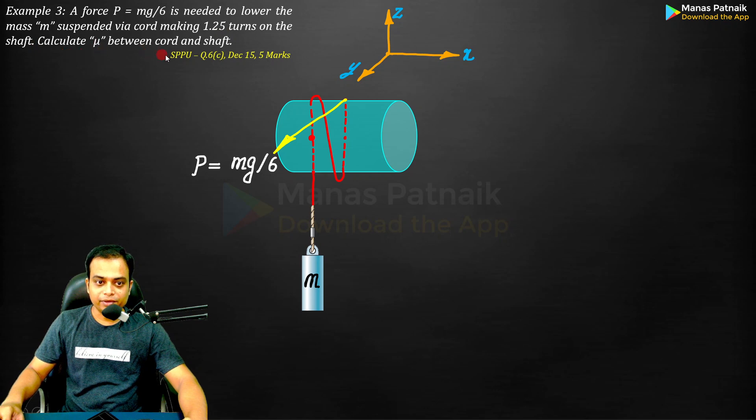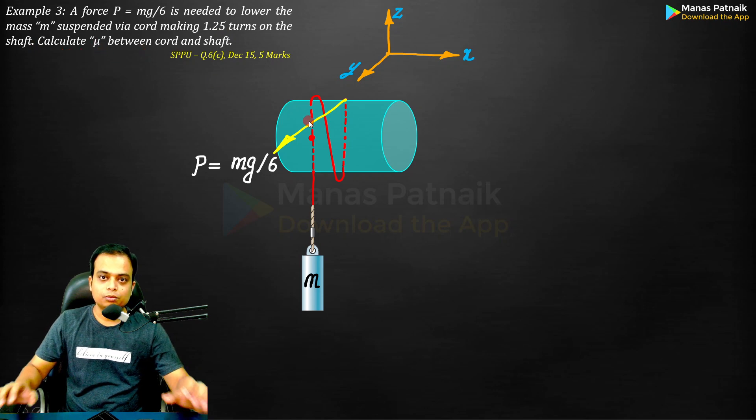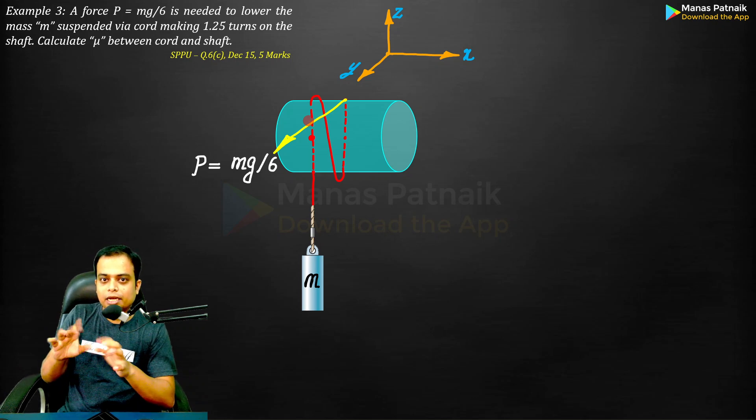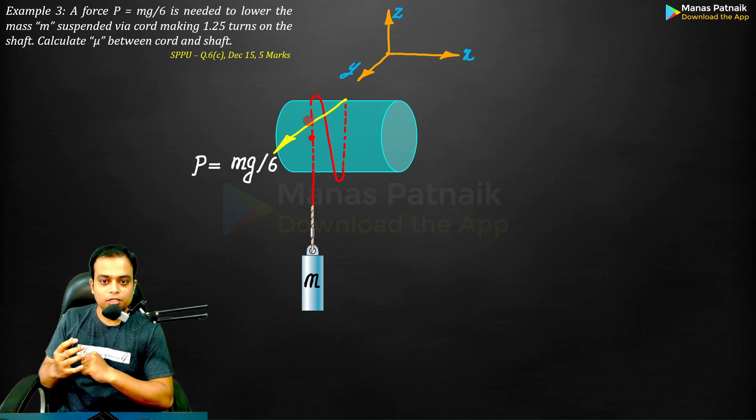Calculate μ between cord and the shaft. The cord and shaft are in contact with each other. What is the coefficient of static friction between them? That is what has been asked. How to approach such problems?